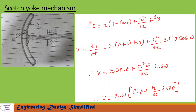Now let us differentiate this equation to find the velocity of the plunger. v = ds/dt. Differentiating: the derivative of 1 with respect to time is 0, the derivative of minus cos(θ) gives ω·sin(θ), and the derivative of sin²(θ) gives 2·sin(θ)·cos(θ)·ω. After simplification, the velocity equation is: v = rω·sin(θ) + (r/2R)·sin(2θ). This is the equation to find the velocity of the plunger.